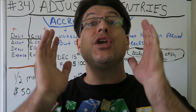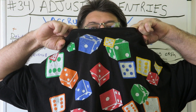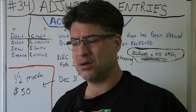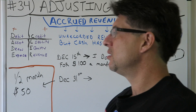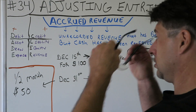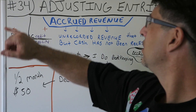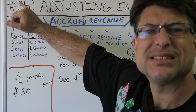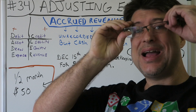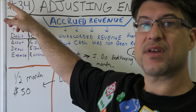If you're back, you know what it is — let's get it in. Accounting for Beginners number 34, classic series. Today we're covering adjusting entries — specifically accrued revenue.